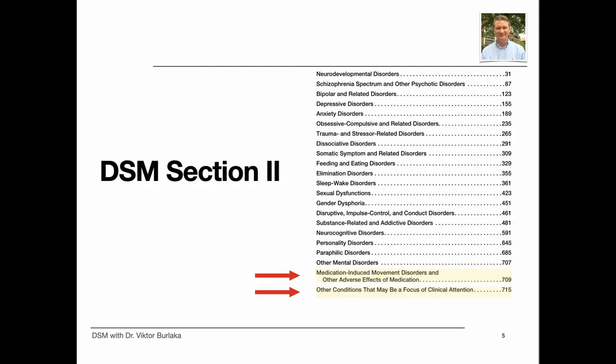There are two exceptions. The first exception are conditions included in the chapter on medication-induced movement disorders and other adverse effects of medication. This chapter is important because medications are often used to manage symptoms of mental disorders. Professionals also use it to differentiate diagnoses of mental disorders — for example, anxiety disorder versus neuroleptic-induced akathisia, or malignant catatonia versus neuroleptic malignant syndrome.